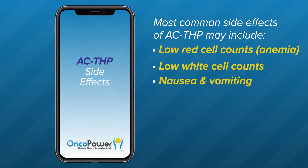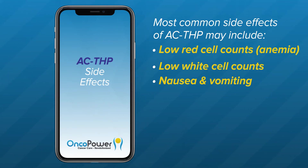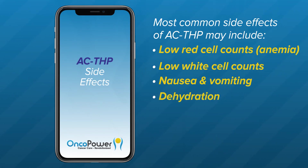Nausea and vomiting: the ACTHP regimen can cause two types of nausea or vomiting. Immediate nausea and vomiting occurs within one to two hours of chemotherapy administration and can last up to 24 hours. Delayed nausea or vomiting presents more than 24 hours after chemotherapy administration and can last for up to five days. Your doctor may prescribe oral nausea medications like ondansetron, prochlorperazine, or promethazine. Dehydration from diarrhea or vomiting may also occur — increase your fluid intake and call your doctor so you can be evaluated right away.